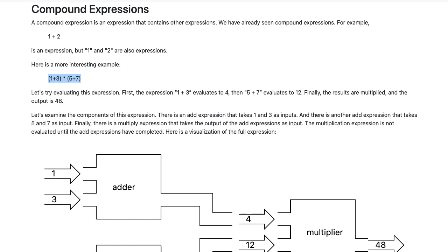Let's examine the components of this expression. There is an add expression that takes 1 and 3 as inputs, and there is another add expression that takes 5 and 7 as inputs. Finally, there is a multiply expression that takes the output of the two add expressions as input. The multiplication expression is not evaluated until the add expressions have completed. Here is a visualization of the full expression.